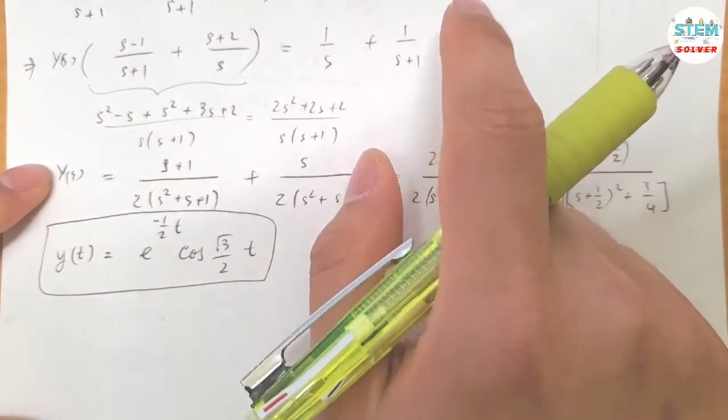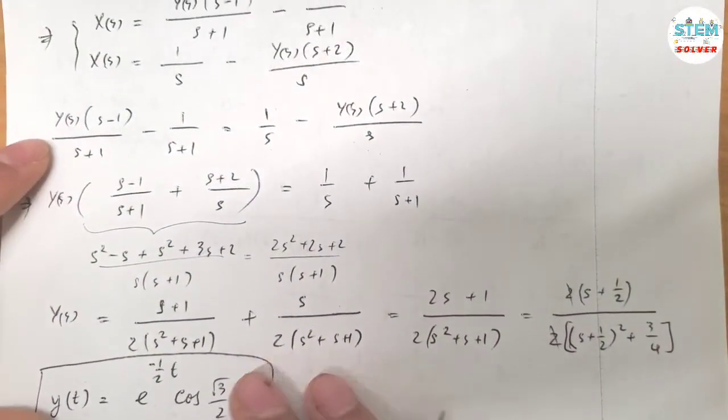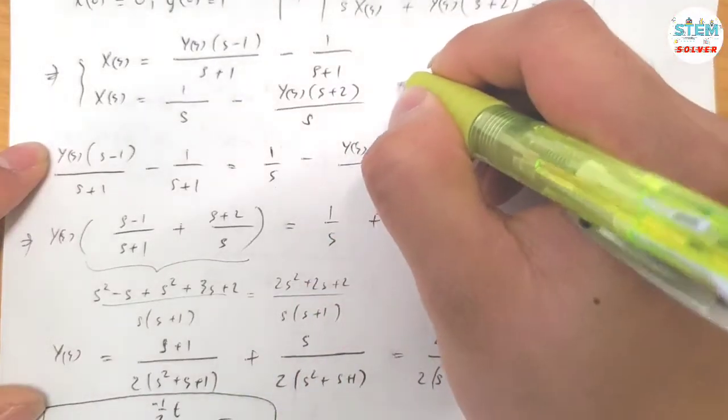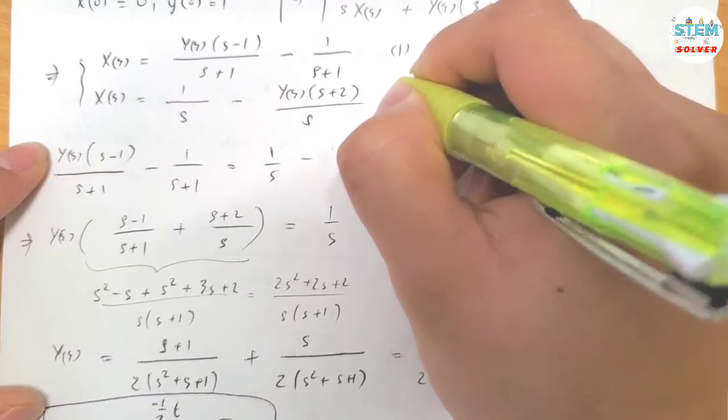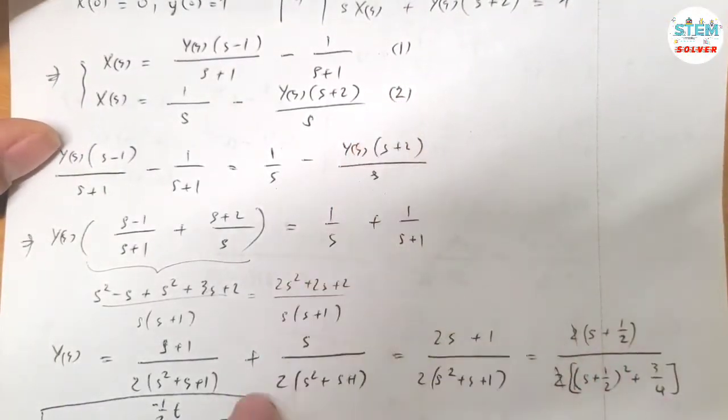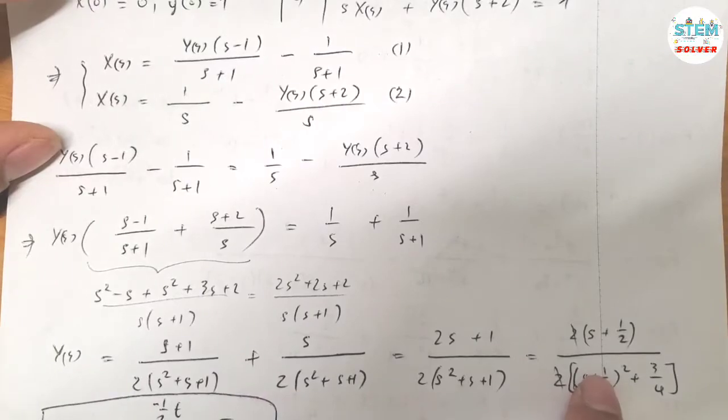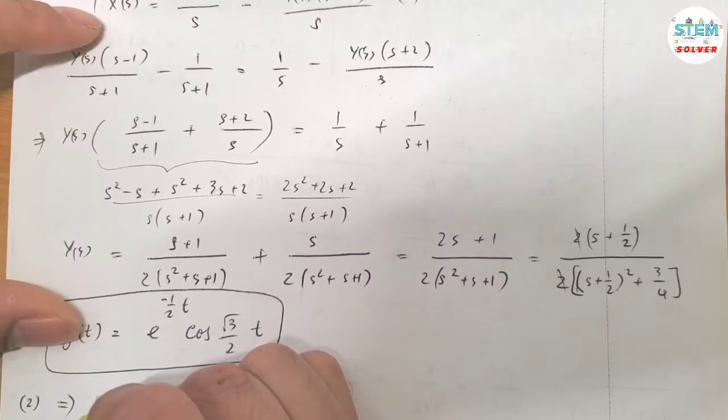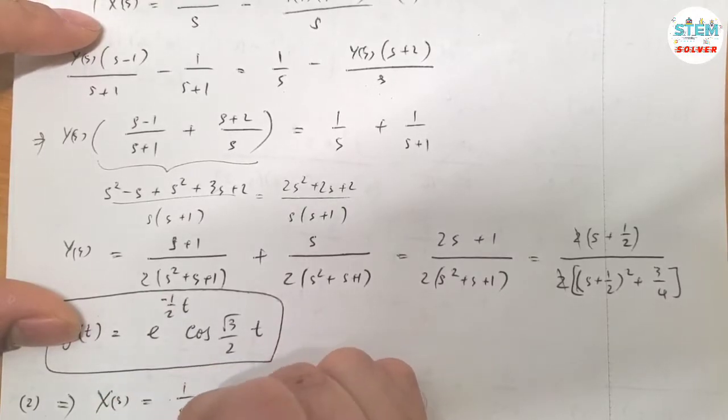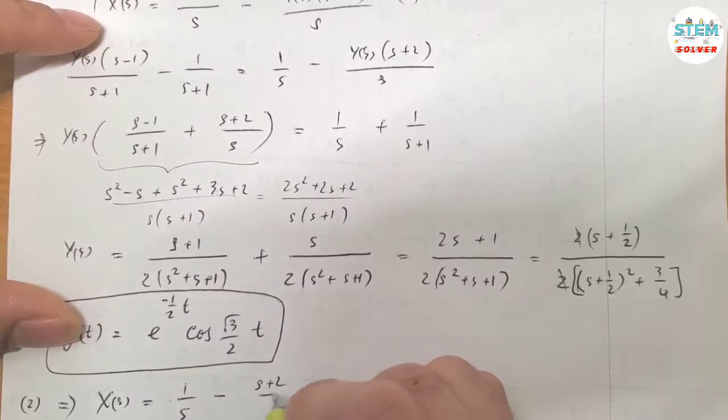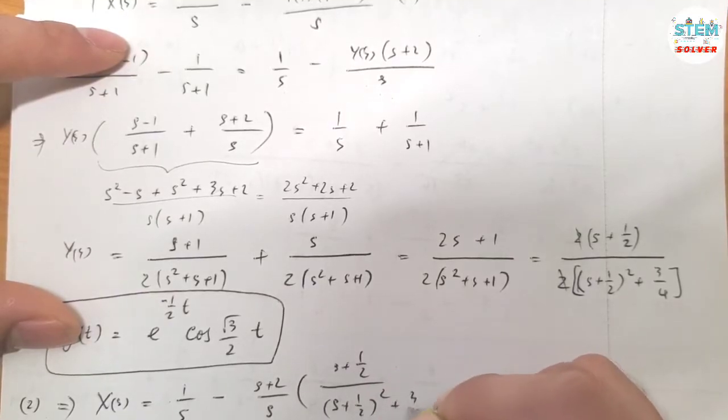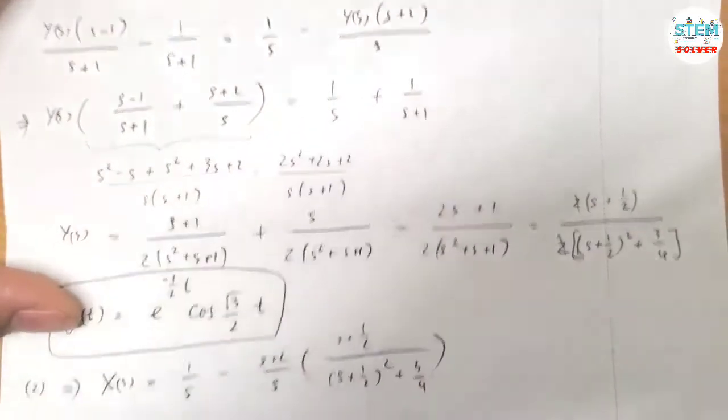Now we also need to solve for X(t). So let me go up here. Let me use this equation. Let me call this equation 1 and this equation 2. So plug in using equation 2. So equation 2 you have X(s) equals 1/S minus (S plus 2)/S times Y. Y(s) and Y(s) is equal to (S plus 1/2) over ((S plus 1/2)² plus 3/4).